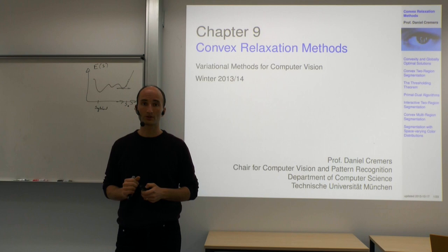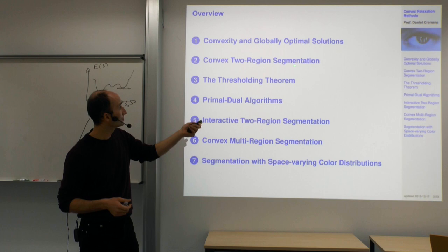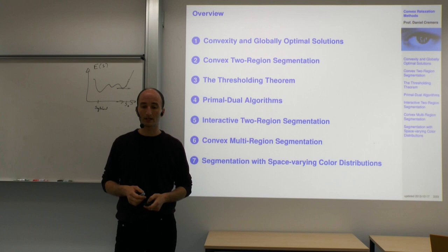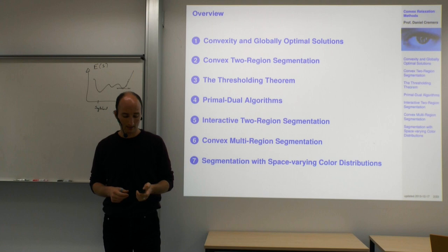We will talk about globally optimal solutions and convexity. We'll start with the two-region segmentation case and then go to the multi-region segmentation case. Historically, the two-region case was convexified around 2005, and the multi-region case was convexified around 2008 for the first time.